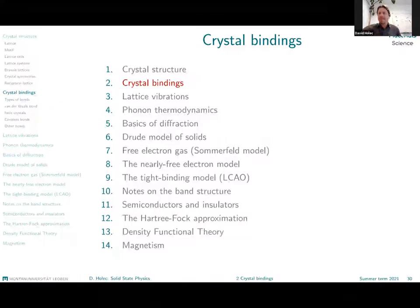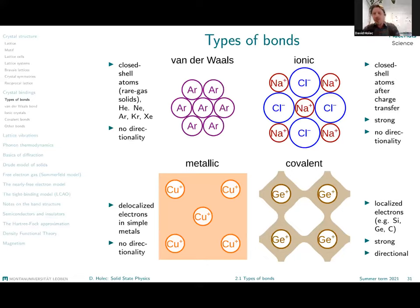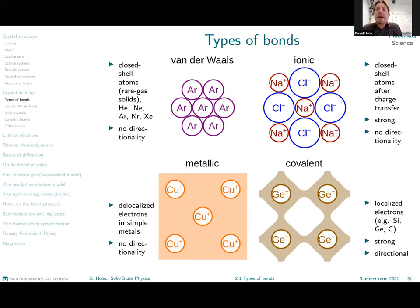Crystal bindings. What are these? What types of bonds do we know in materials? The basic picture I want you to have burned into your head is the one shown here. These are the most important types of interactions and bindings in solid state materials.